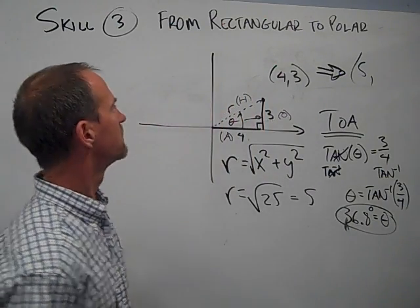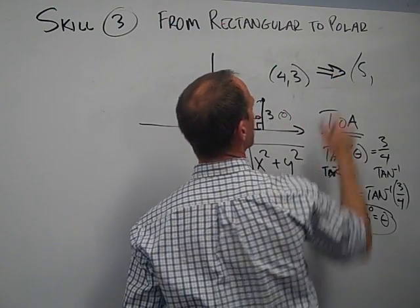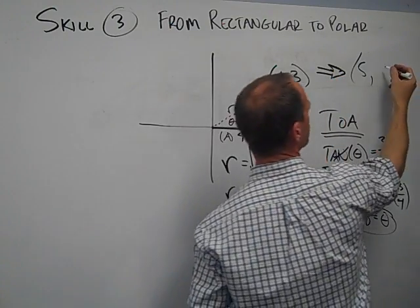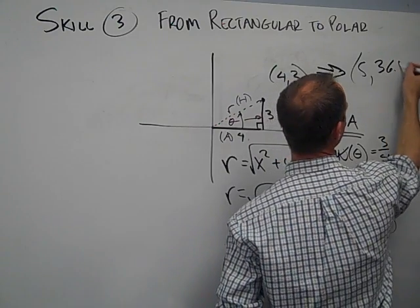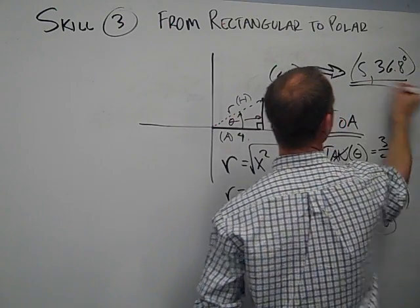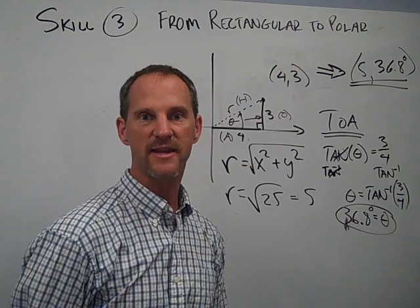So then converting this from rectangular to polar will be 5 comma about 36.8 degrees. So that's that example.